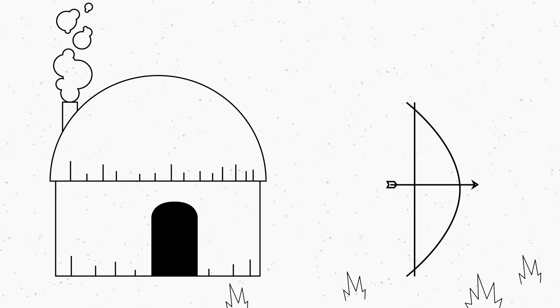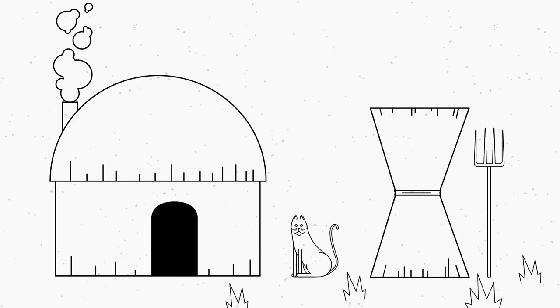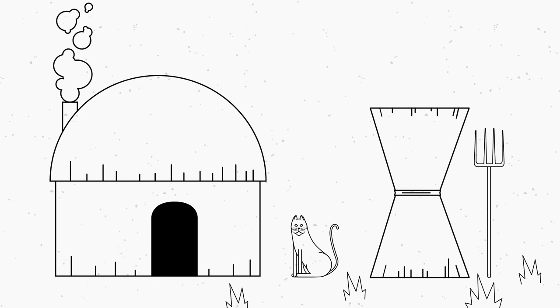As a side note, it's possible that this is why you don't see hunter-gatherers domesticating cats until after they transition to farming. Before there was grain for them to poach, the mice weren't considered pests,